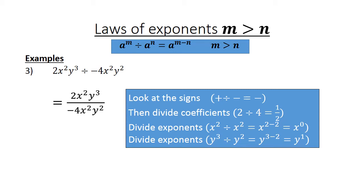Divide exponents: x to the power of 2 divided by x to the power of 2 equals x to the power of 0. And y to the power of 3 divided by y to the power of 2 equals y to the power of 3 minus 2, equals y to the power of 1. The final answer equals negative 1 over 2, y.